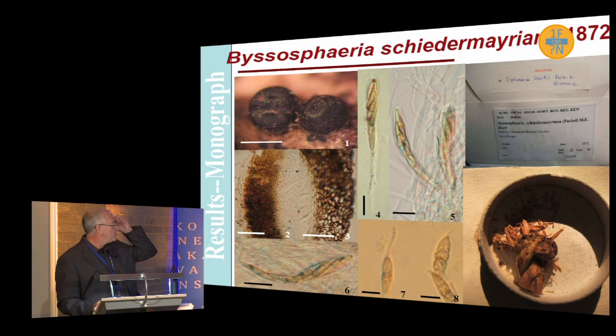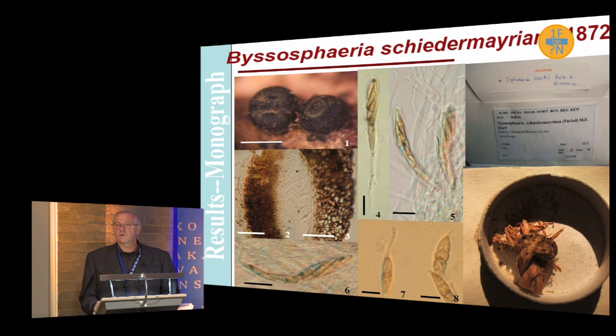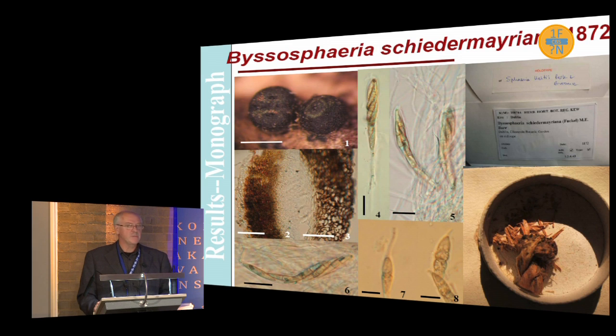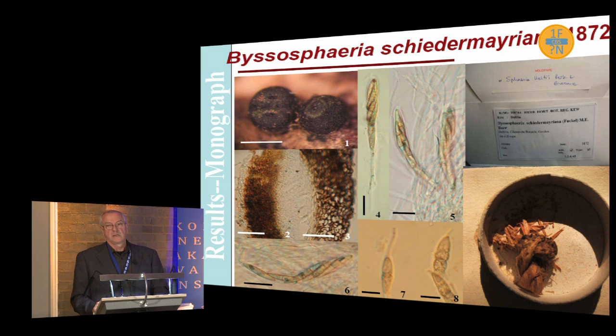This is the type of Bisospheria smideriana, which was described in 1872 — a really old specimen. You can see the small little bit of material which is the type. If you make a nice slide, you can actually get some characters from it — you can see the Ascamata, the Acai, and so on. But what you cannot do is get any DNA out of this; you cannot sequence it. So the type is subjective — you can see the characters, but that's all you can do.